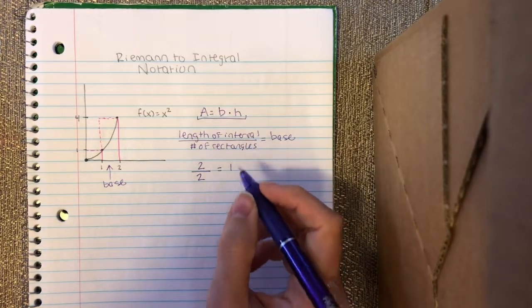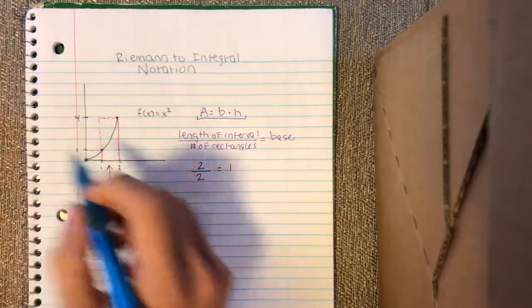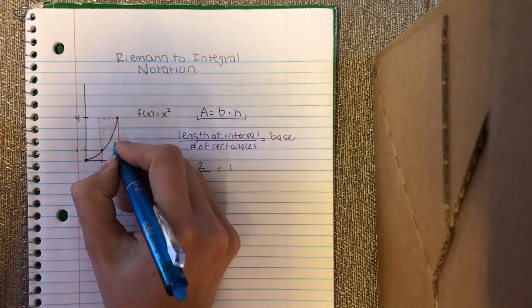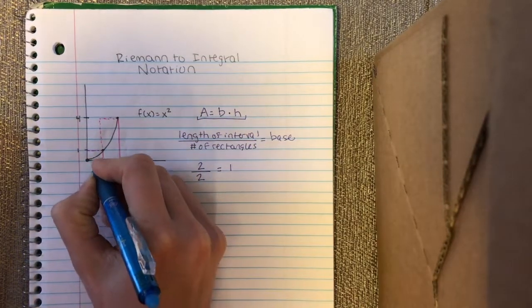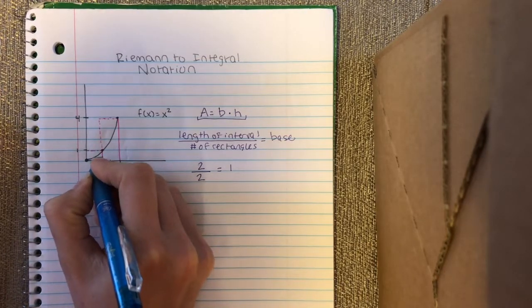But my second question is, what if I want more rectangles? Hopefully through this activity, you saw that we could use more rectangles and more subdivisions to make our area approximation a little bit better.